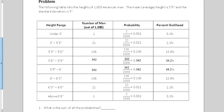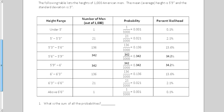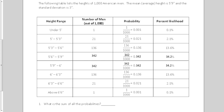This is a table. And the table lists the heights of a thousand American men. The mean or the average height is five foot nine. And the standard deviation is three inches. So this is a table of that collected data. So if you look at how many men were under five feet tall, there was one man out of the thousand men listed. So the probability that you were under five feet tall was one out of one thousand men. If we convert that to a decimal, it's 0.001. So as a percent, we would move the decimal places two to the right. And that's 0.1 percent.